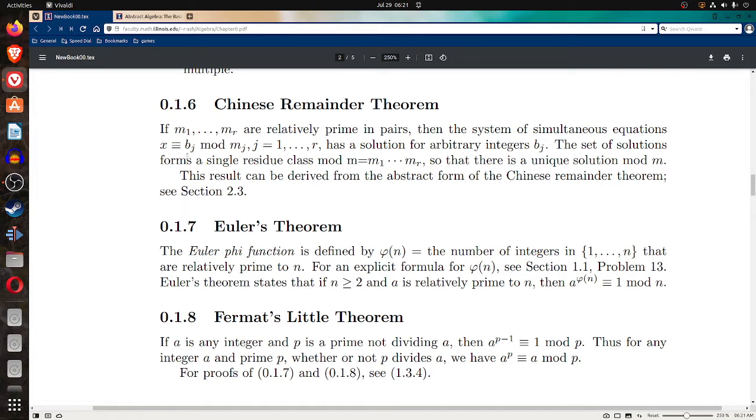x congruent to b sub j mod m sub j, j equals 1 through r, that's the same as the number of m's, has a solution for arbitrary integers b sub j.